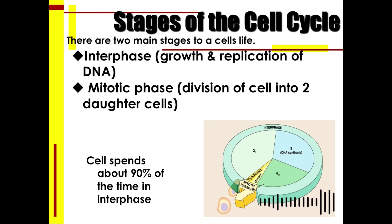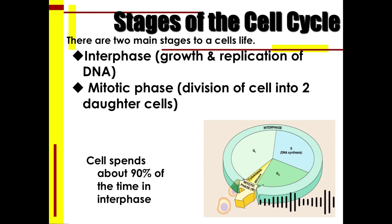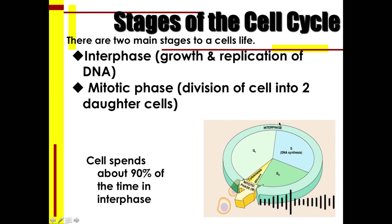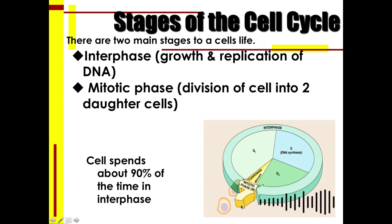For the stages of mitosis, or the cell cycle, there are two main stages. The first is interphase, where the growth and replication of the DNA occurs. The second is the mitotic phase, where the division of the cell into two daughter cells takes place. During interphase, the cell spends about 90 percent of its time, so the initial stage is much longer compared to the mitotic phase.